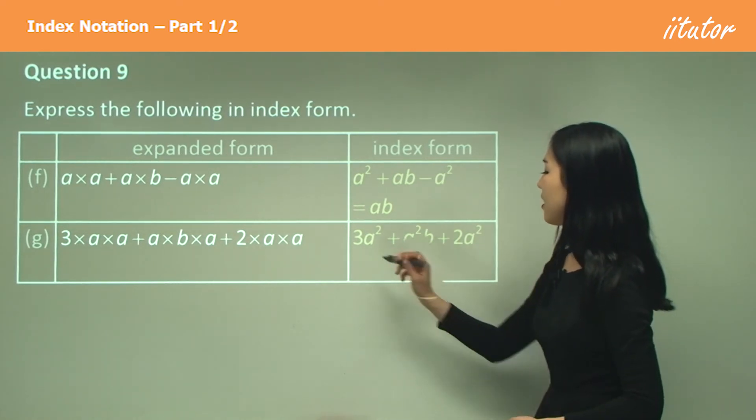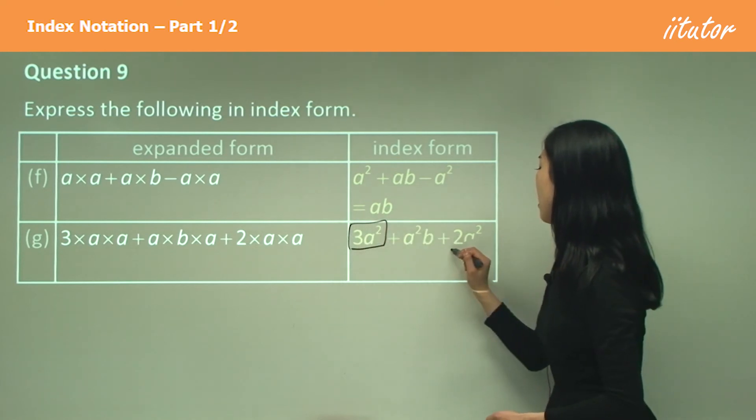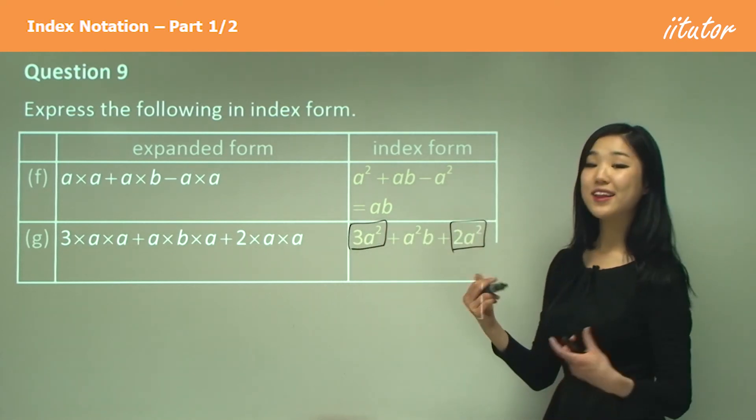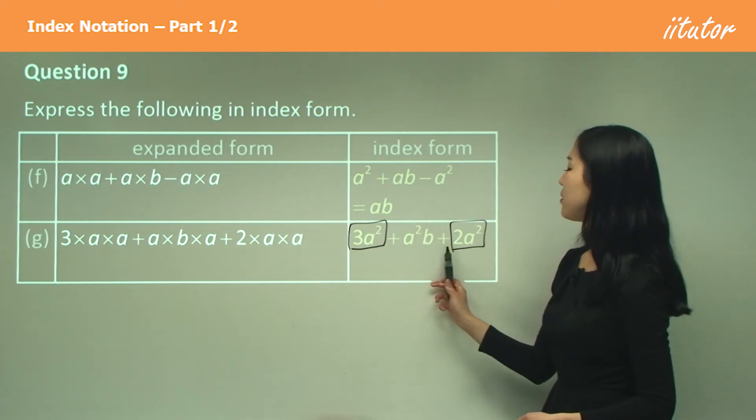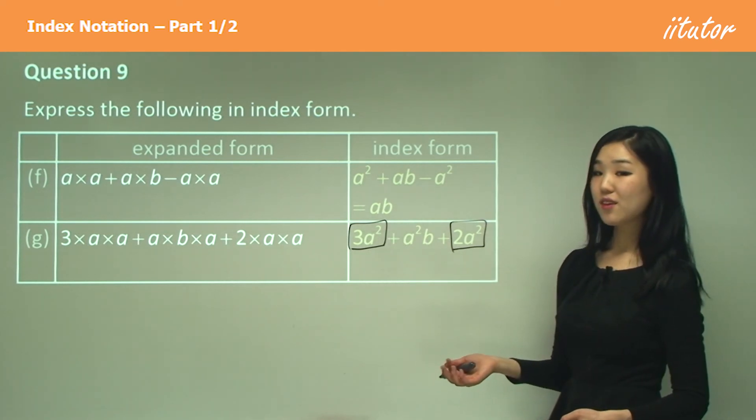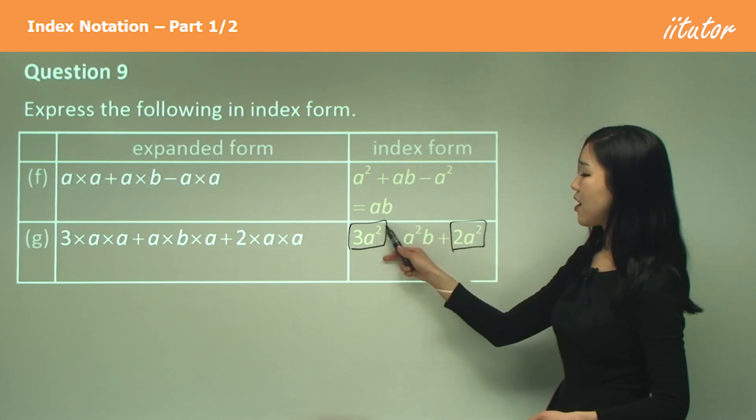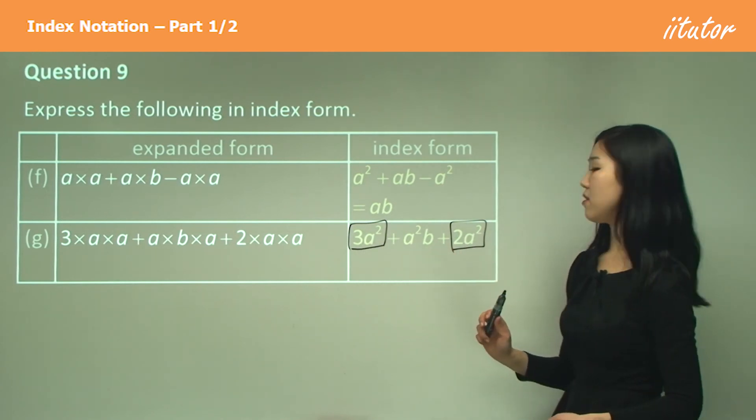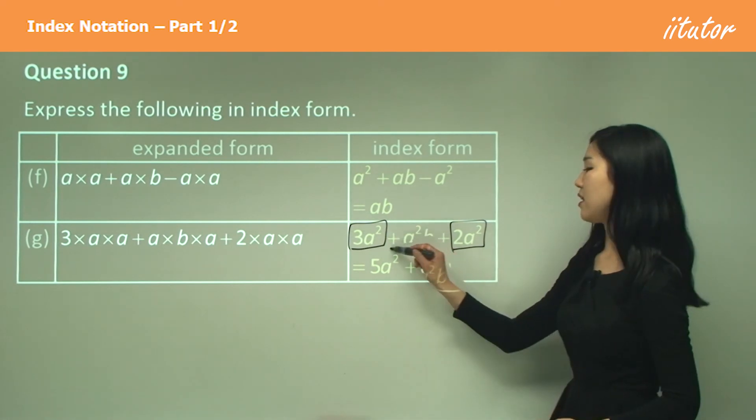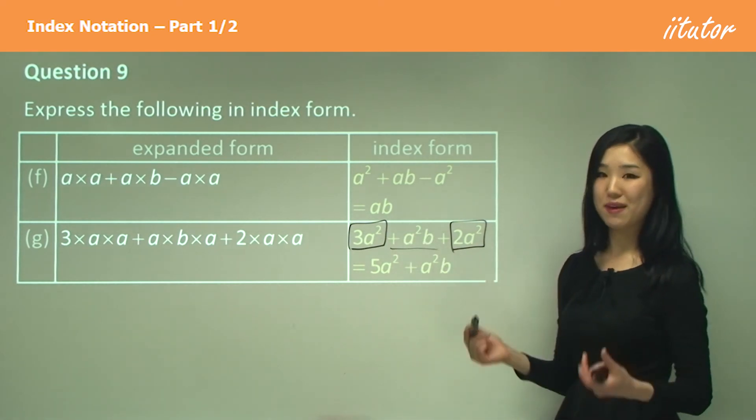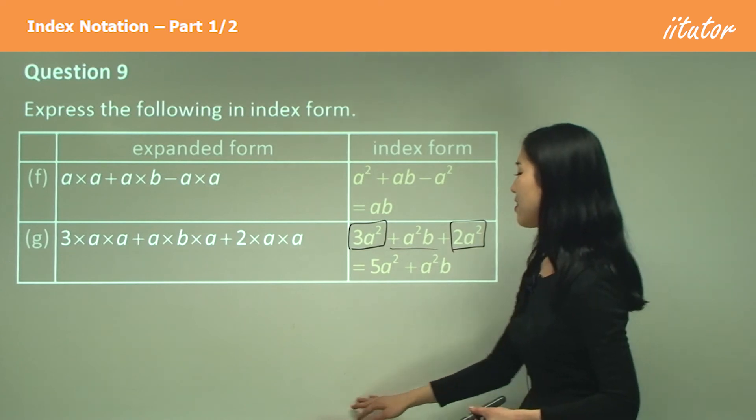And you can see here 3a squared and 2a squared are like terms. So we actually can group them together. So 3a squared plus 2a squared is? Well a squared is a like term. So you're going to add up your numbers in front. It's going to be 5a squared plus the remaining number a squared b. That's pretty much it. I just gathered the like terms again.